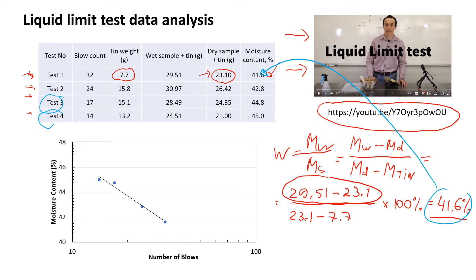What I would like to do is I'm going to look at the number of blows, this is what we counted during the test, and we're going to plot it against moisture content. I already did it here. This is number of blows.